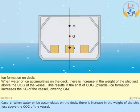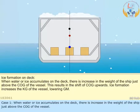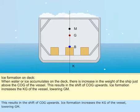Case 1. When water or ice accumulates on the deck, there is an increase in the weight of the ship just above the COG of the vessel. This results in the shift of COG upwards. Ice formation increases the KG of the vessel, lowering GM.